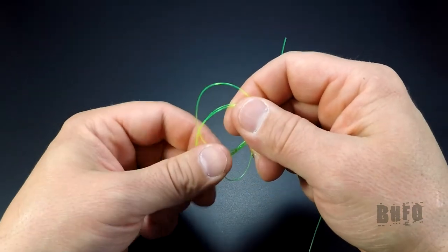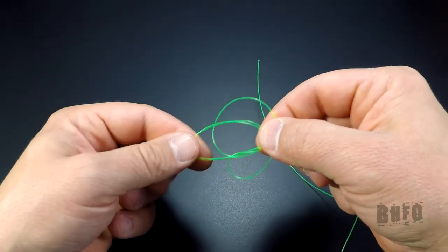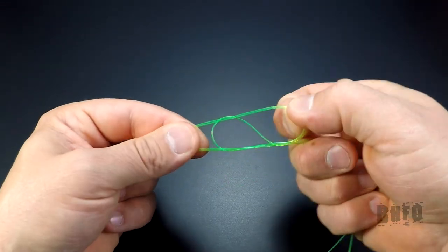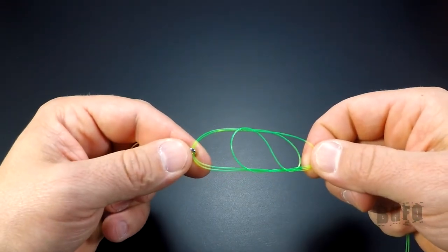Now pull the tag and the mainline drawing the knot about the size of a half dollar. You should end up with something like this.